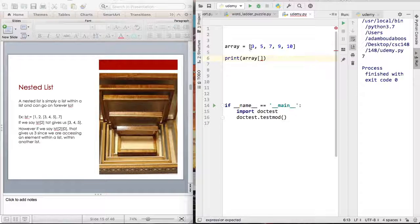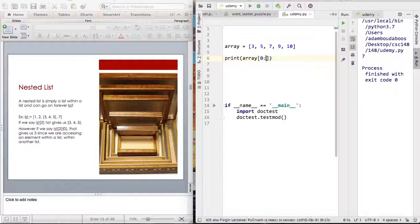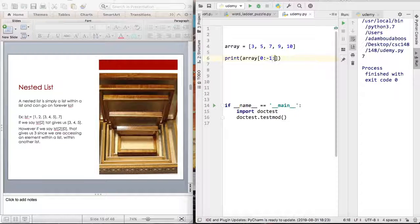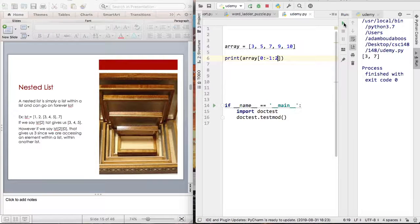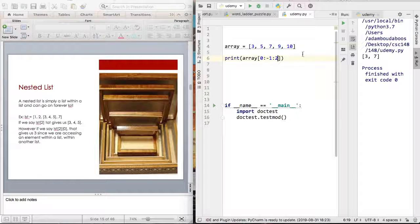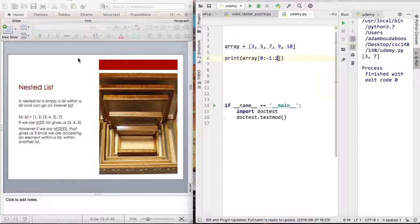Let's say I want to access from index 0 to the last index but we're going to count two steps. This gives 3 and 7 because you start at 3, count 1, 2, then 7, then 9, 10. It doesn't include 10. These are just some examples.